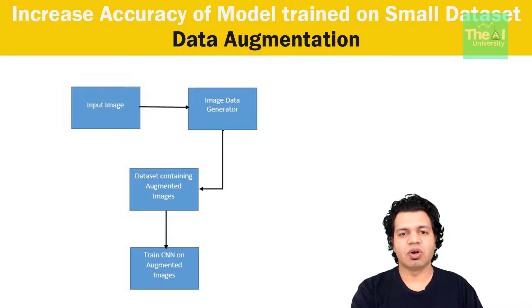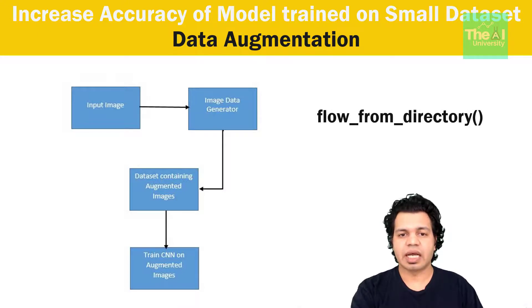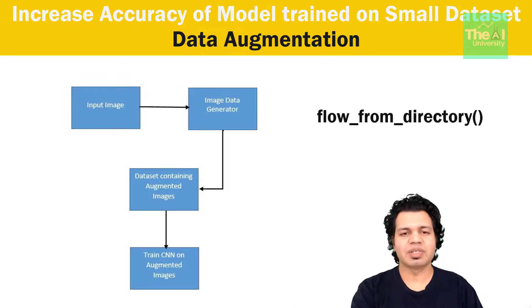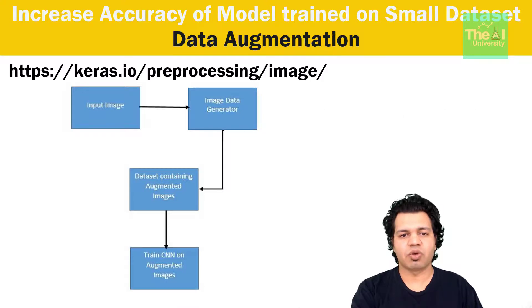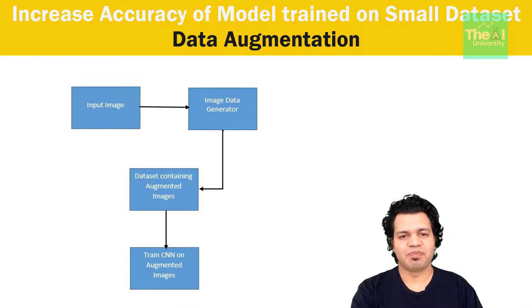There is another method called flow_from_directory which is used in conjunction with ImageDataGenerator. It pulls images from the directory and based on the parameters defined inside ImageDataGenerator it generates variations of the original image. We can also define the batch size and target size of the image inside this function, and the same can be done for validation or test data. For more detail on data augmentation you can visit the Keras documentation page — the link is provided in the description.